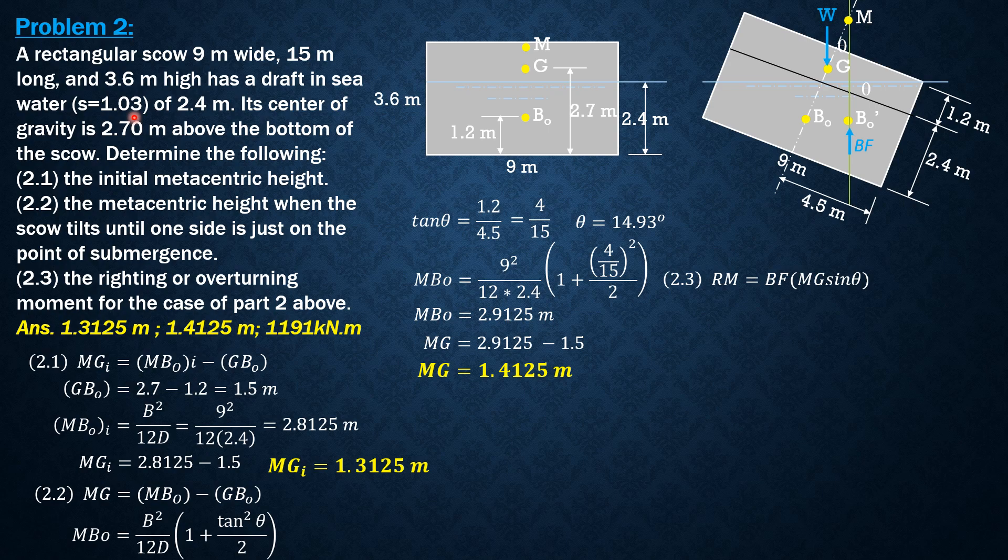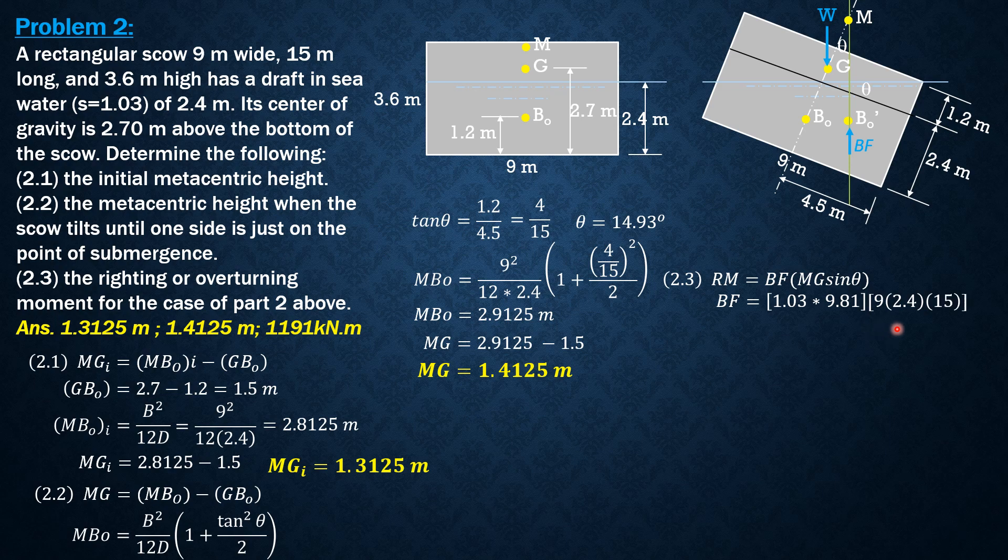Where the buoyant force is specific weight of seawater, 1.03 times specific weight of water, 9.81 kN/m³, times the volume submerged, which is 9 × 2.4 × 15. So 1.03 × 9.81 × (9 × 2.4 × 15), that's the volume displaced or submerged: 3,273.79 kN.